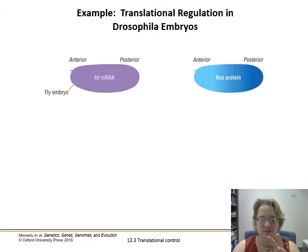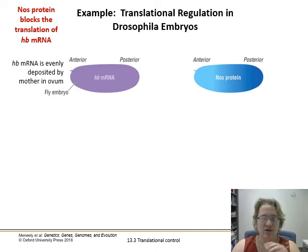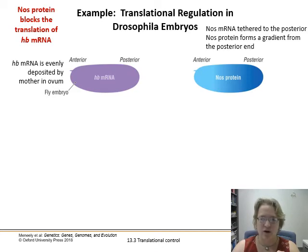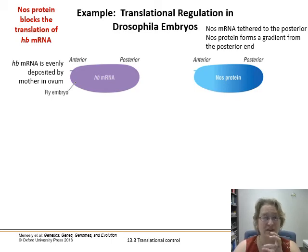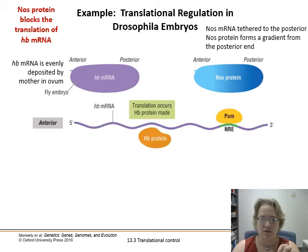The maternal nuclei and DNA congregate toward one spot in the cell. Hunchback mRNA is evenly deposited by the mother in the ovum, but nos mRNA ends up being tethered to one end of the cell wall — that's where the gradient begins. The nos protein forms a gradient from the posterior end, and the nos protein is going to block translation of the hunchback protein over time.